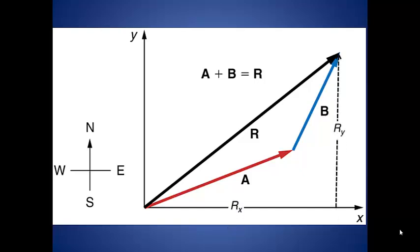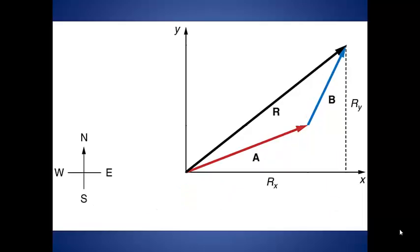We can form a right triangle with our coordinate system and our resultant vector. In order to determine the x and y components of our resultant vector, we need to determine the x and y components of our a vector and the x and y components of our b vector.